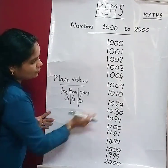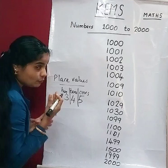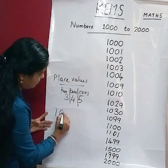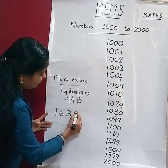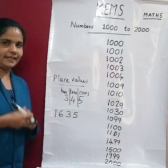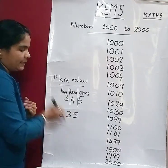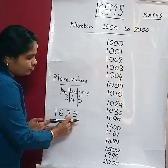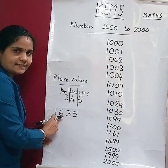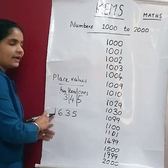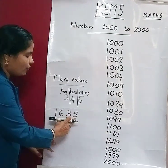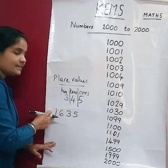Now for 4-digit numbers: 1s, 10s, 100s, and 1000s. Listen — take the number 1635. 5 is the 1s place, 3 is the 10s place, 6 is the 100s place, and 1 is the 1000s place.